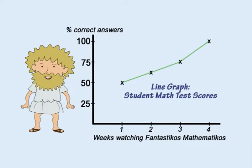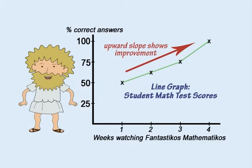A line graph is useful for showing numerical data that is part of a connected pattern, such as change that occurs over time. For example, this graph shows the mathematics test scores of students who watched Fantasticos Mathematicos over a period of four weeks. Did their test scores improve or decline during this time? They show a pattern of continuous improvement.